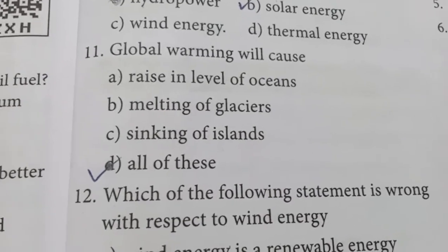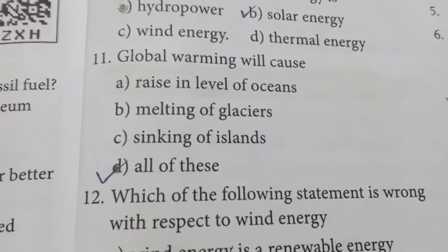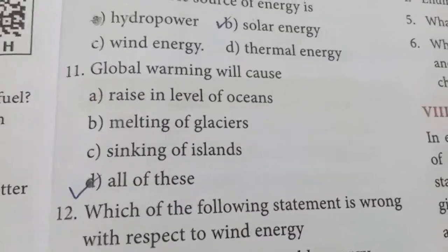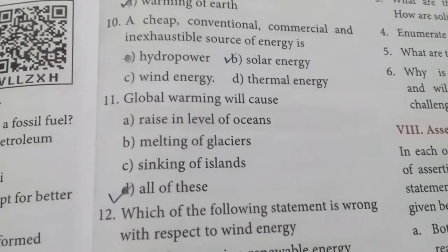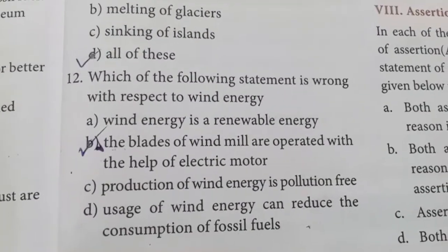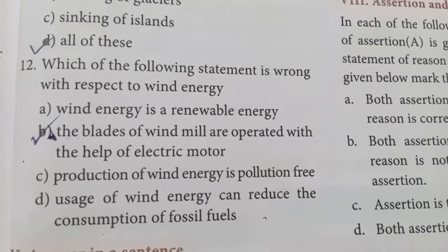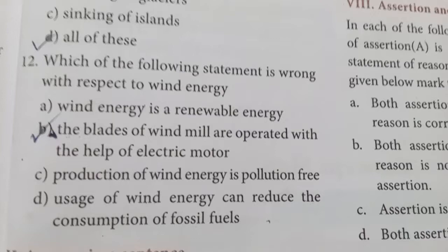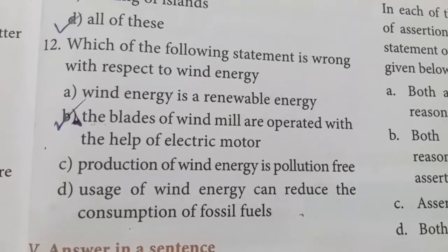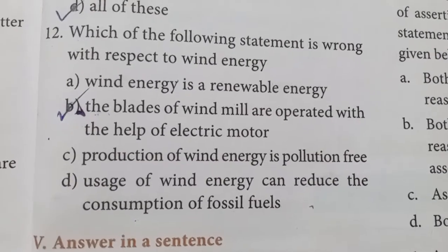When glaciers melt, the water enters the sea, causing a rise in ocean levels and sinking of islands — all three effects are caused by global warming. Which statement is wrong about wind energy? 'The blades of a windmill are operated with the help of an electric motor' is the wrong statement — windmill blades are operated by wind energy, not an electric motor. Wind energy is renewable and pollution-free.